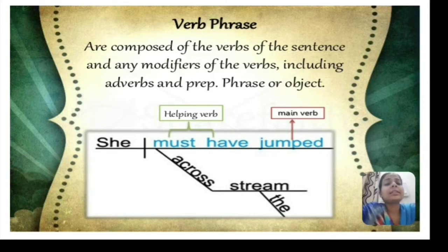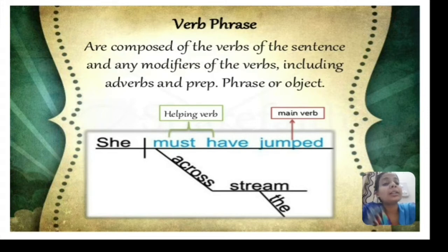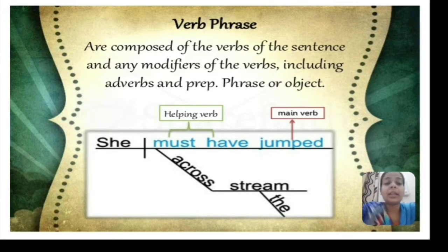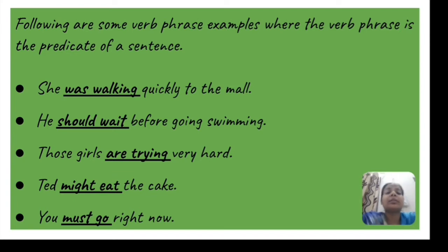For example, the sentence 'she must have jumped across the street' — here 'must have jumped' is a verb phrase because 'must have' is a helping verb and 'jumped' is the main verb. So a verb phrase is composed of an auxiliary verb as well as a main verb.